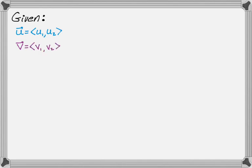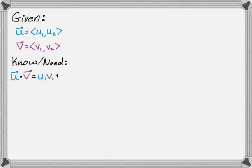There are a bunch of things that we either know or need to know, so I'm just going to list those out. The first thing is the dot product of u and v — u dot v — is u1*v1 plus u2*v2. You multiply the first components, multiply the second components, and then add those together.